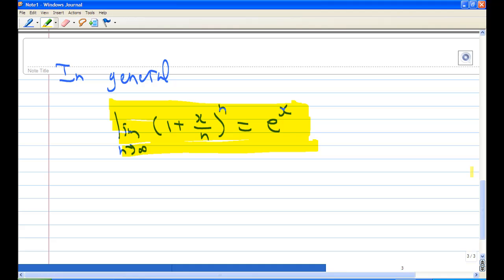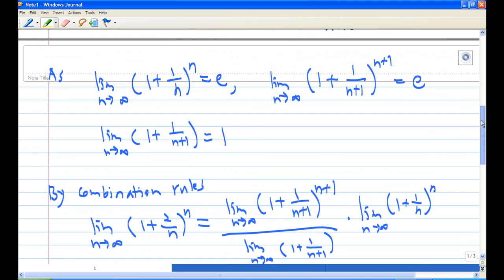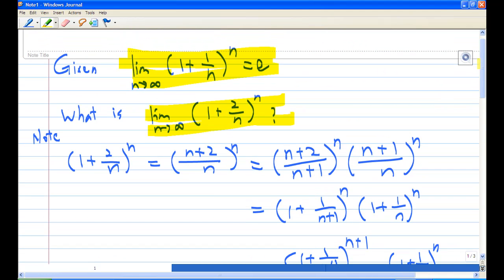Okay, so this ends the recording showing you how to find the limit of (1 + 2/n)^n by using the result that (1 + 1/n)^n is e as n goes to infinity.